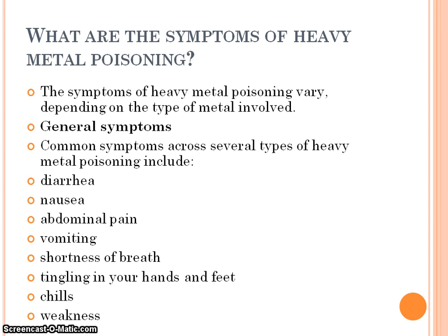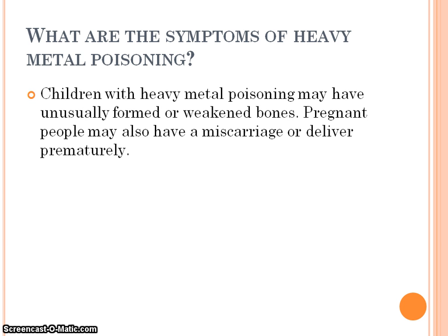The symptoms of heavy metal poisoning vary depending on the nature and type of metal involved. Some general symptoms common across several types of heavy metal poisoning include diarrhea, nausea, abdominal pain, vomiting, shortness of breath, tingling in your hands and feet, chills, and weakness. Children with heavy metal poisoning may have unusually formed or weakened bones, and pregnant people may experience miscarriage or premature delivery.